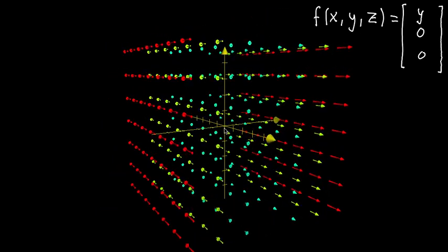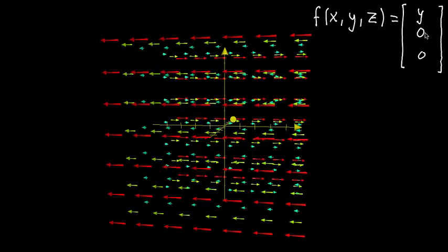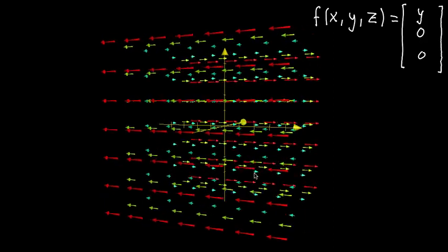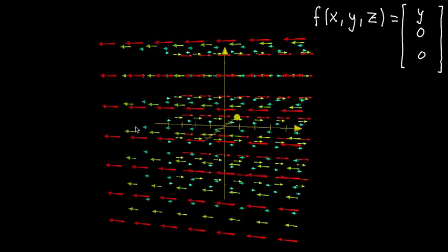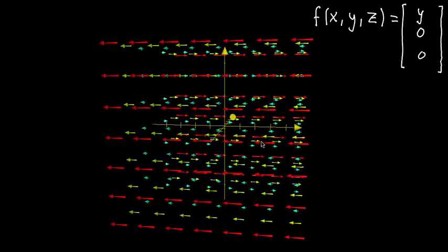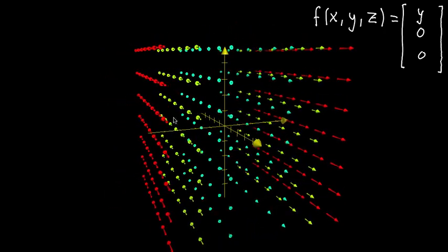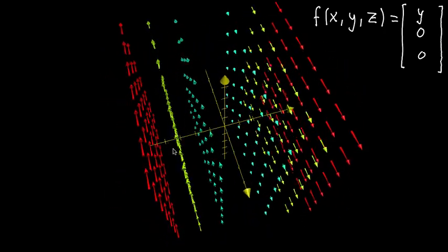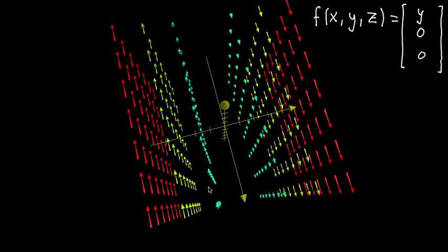So a couple things to notice about this one. Since the output doesn't depend on x or z, if you move in the x direction, which is back and forth here, the vectors don't change. And if you move in the z direction, which is up and down, the vectors also don't change. They only change as you move in the y direction.